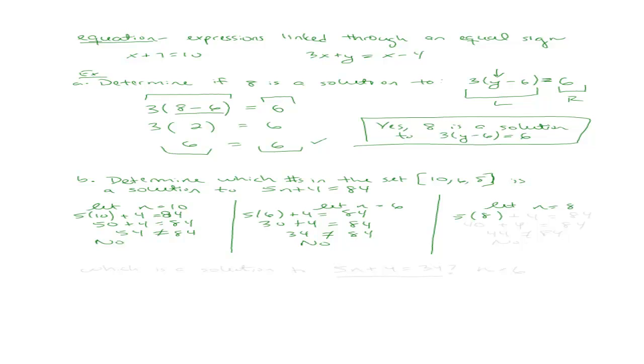5 times 8 plus 4 equals 84. 5 times 8 is 40 plus 4 equals 84. 44 is not equal to 84. So it actually turns out that none of these are a solution to the equation.